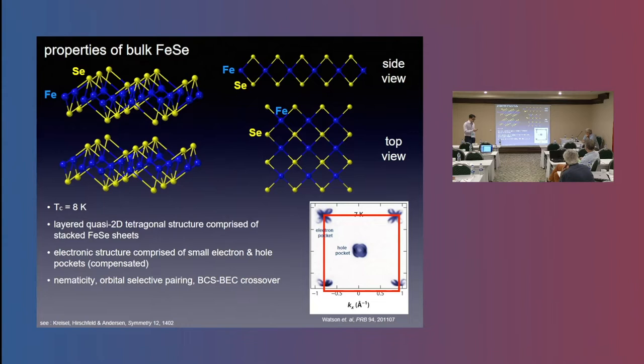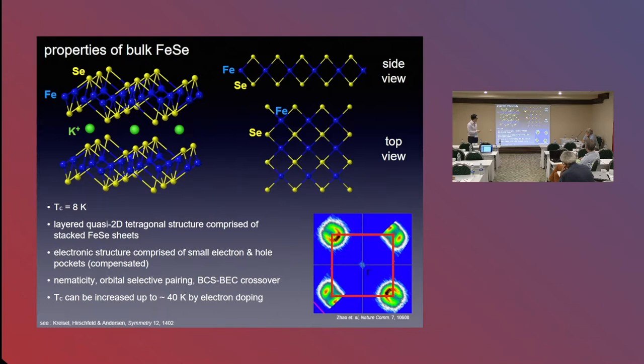But one thing that is germane is that people have found that if you electron dope material by putting electron donors in between the iron selenide layers, you can basically push the chemical potential up, you get rid of the hole pocket at the zone center, you get these electron pockets, and TC is raised to about 40 Kelvin in bulk.